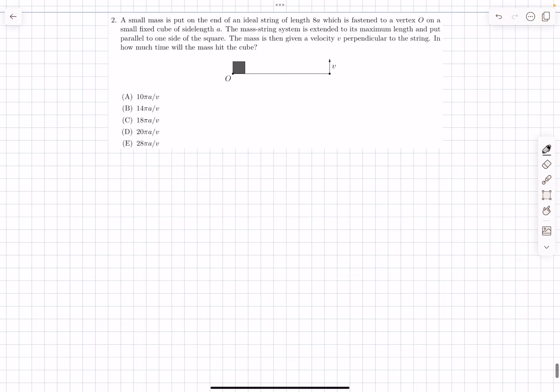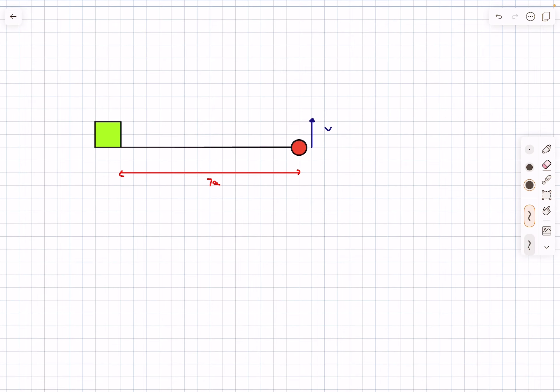Let's begin with the discussion. This is how the situation looks. As we impart a velocity v perpendicular to the string, this mass m is going to perform circular motion. Let's say at some intermediate distance the particle is over here, and its velocity is something like this.